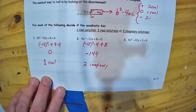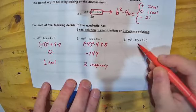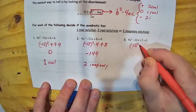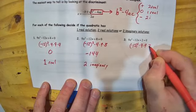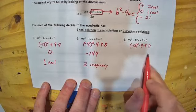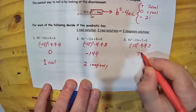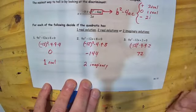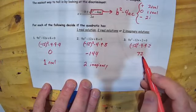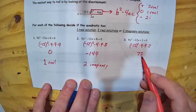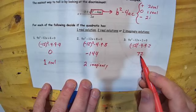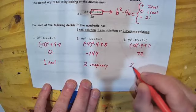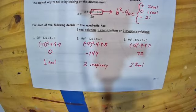The last discriminant problem: negative 12 squared minus 4 times 9 times 2. Crunching those numbers, we get 72. We have to take the square root of 72. It's going to come out to something, but it's not going to be negative and not zero. So we're going to get two real solutions.